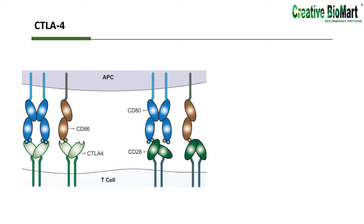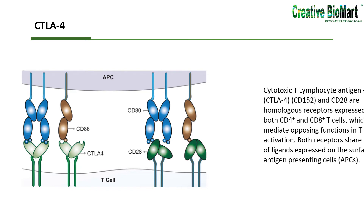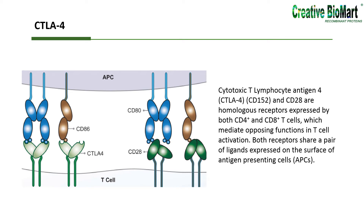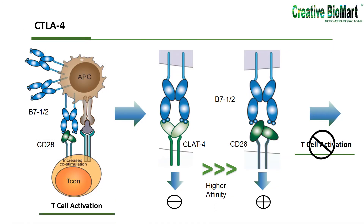The most widely studied immune checkpoint inhibitors are anti-CTLA-4, anti-PD-1, and anti-PD-L1 monoclonal antibodies, which target the T-cell regulatory pathways to augment antitumor immune responses. CTLA-4 and CD28 are homologous receptors expressed by both CD4+ and CD8+ T-cells, which mediate opposing functions in T-cell activation. Both receptors share a pair of ligands expressed on the surface of APCs. The process of T-cell activation is tightly regulated by co-stimulatory signals for full activation, and it is also regulated by co-inhibitory signals. The main co-stimulatory signals for T-cell activation are from the B7-1 or B7-2 molecules on APCs, which can bind to CD28 on T-cells.